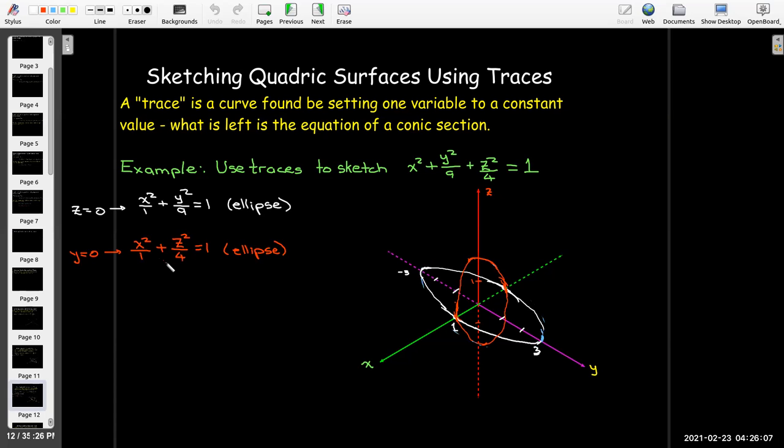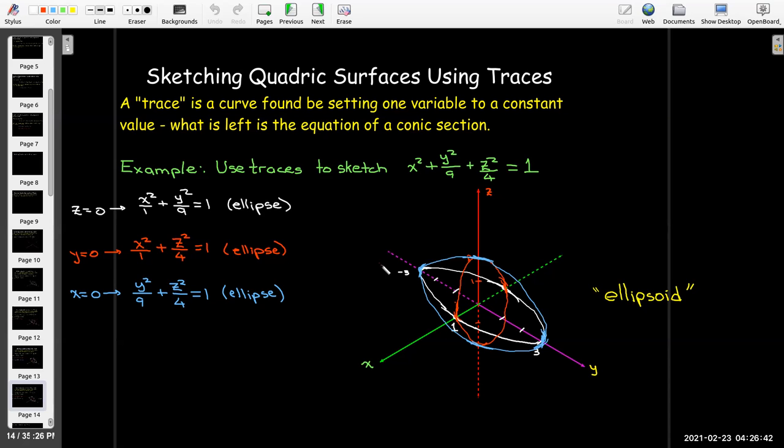If I set y equal to 0, I also get an ellipse, this time in the xz plane. And in fact, if I put x equal to 0, I get yet another ellipse, this time in the yz plane. So what you get is this egg-shaped or football-shaped bounded surface here. And it's called an ellipsoid, which makes sense because all of the traces are ellipses.